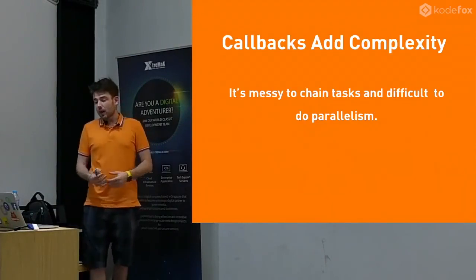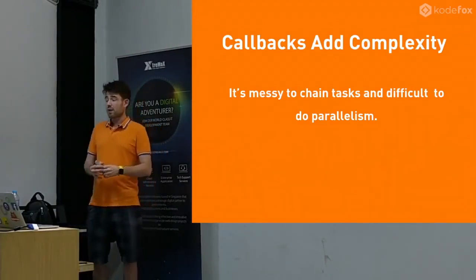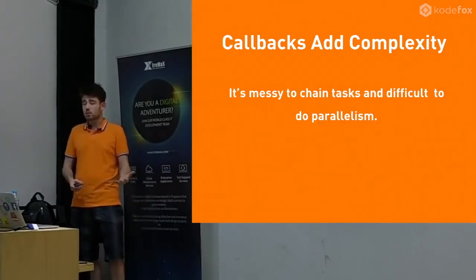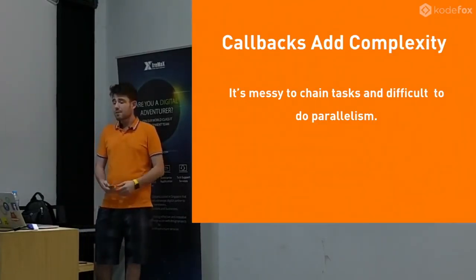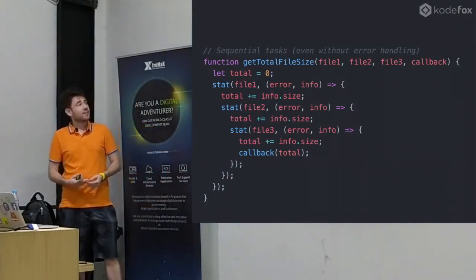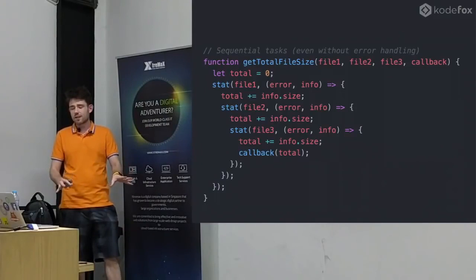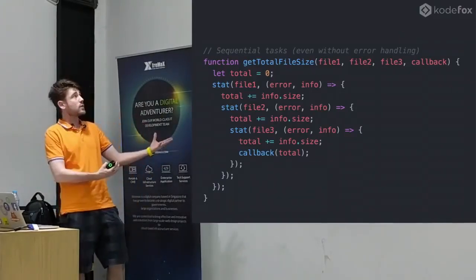Callbacks add complexity. It's messy to chain them. If you need to do three things in a row - like write something to the console, wait a second, write another thing to the console, wait another second, and write something to the console - that's a lot of callbacks. It becomes messy to chain things, and it's pretty hard to do things at the same time. This might be the most code you see on any slide, but I want you to get the idea of how the complexity grows when using this style.